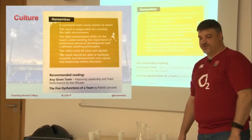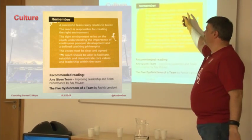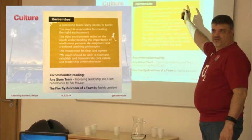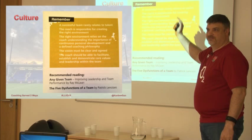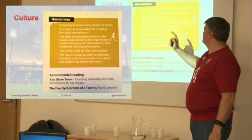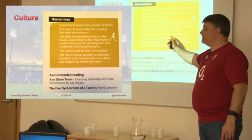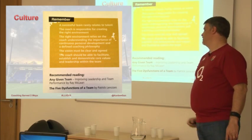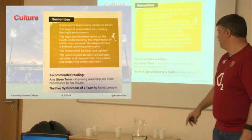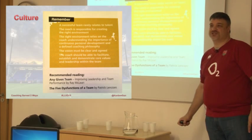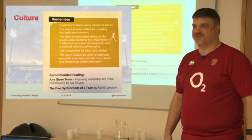Culture. I was so impressed with what's in the manual that I just copied the photograph. A successful team rarely relates to its talent - you don't all need to be ninja coders to have a successful team. It's about having the right environment, the importance of continuous personal development and a philosophy, having a vision which is clear and agreed, and being able to demonstrate core values and leadership. That's pure agile for me. Further reading: The Five Dysfunctions of a Team - common reading in the agile coaching community for a reason. This stuff is the same. Agile turns out it's a team sport.